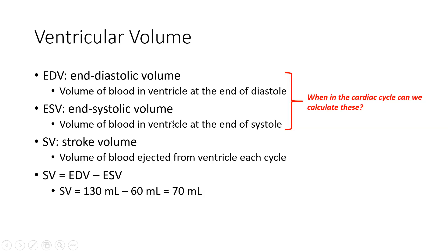The end systolic volume is the volume of blood that is remaining in the ventricle at the end of systole. Systole is the ejection phase. So essentially, end systolic volume is how much blood is left in the ventricle after blood has been ejected into the artery, whereas end diastolic volume is how much blood is in the ventricle before ejection, at the end of the filling phase.